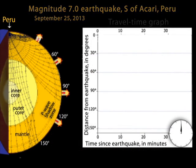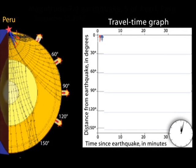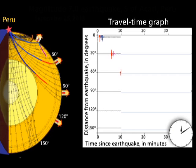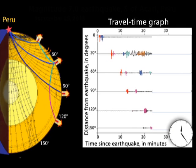Compressional P waves and shearing S waves travel a direct curved path through the mantle. PP and SS waves are P and S waves, respectively, that bounce off the Earth's surface halfway between the earthquake and the receiving seismic station. These waves are often the first to reach stations in the seismic shadow zones.